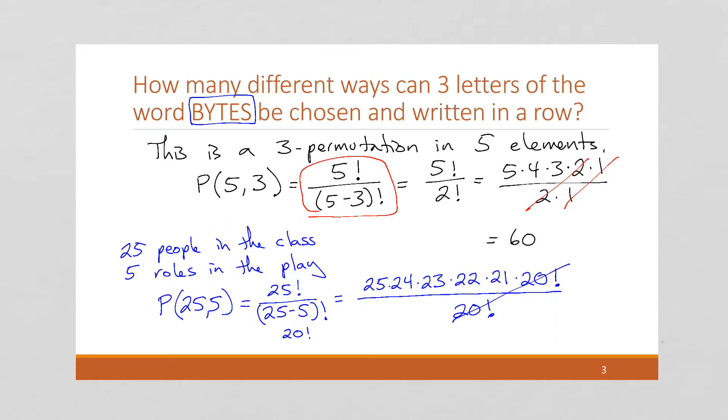Hey, look, all that goes away. Now you can plug this into your calculator. And you'll get still a big number, but much more manageable. This is 6,375,600 different ways to do this. So it's an awful lot of ways of picking those five people.